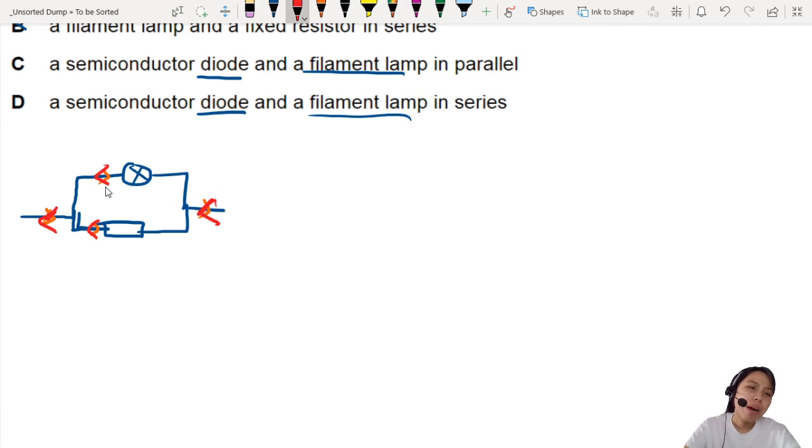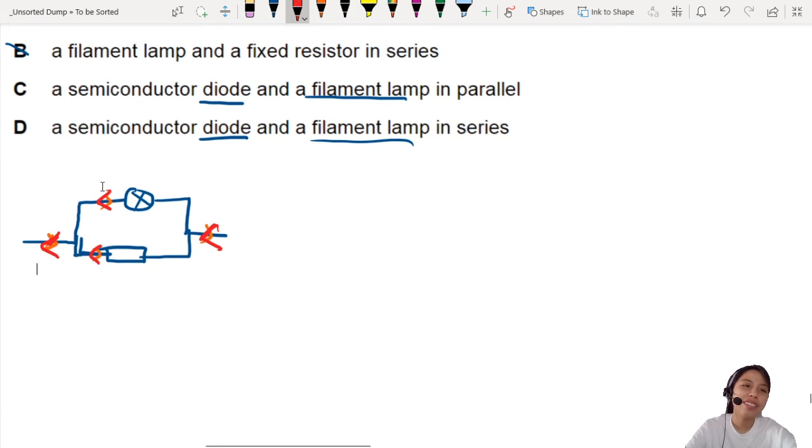But this kind of circuit allows current in both directions. So it shouldn't have that kind of stuff. So something funny here. Probably not correct. This is A.